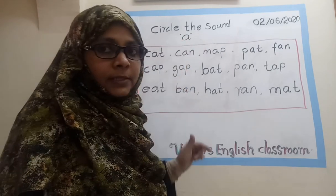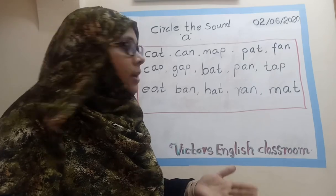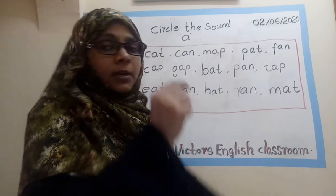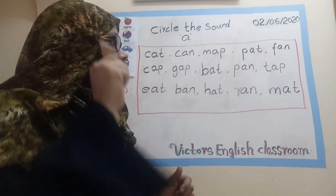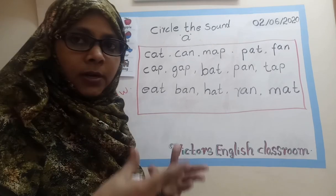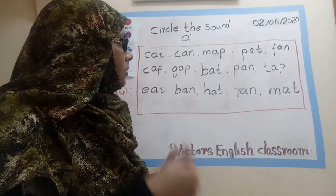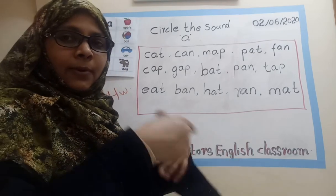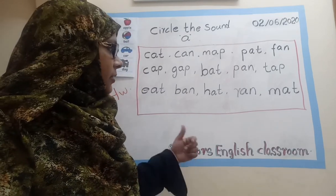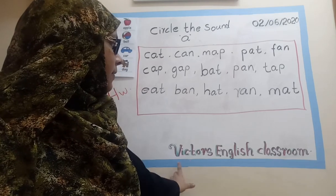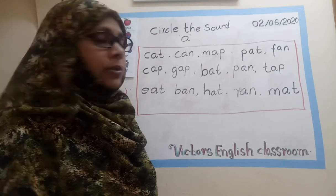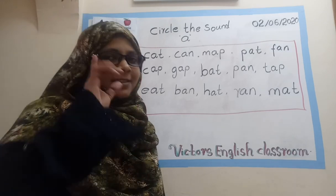This is a homework for you. There are many words — let them have a sound A, then you circle the sound here with your pencil. First, take a paper and pencil and write all the words, and circle the sound A. Okay, the whole time repeat with your mouth and say it loudly, then show it to your parents. If you like my video, please like, share, and subscribe to my YouTube Videos English Classroom channel. Tomorrow I will come with you with another letter. Till then, bye!